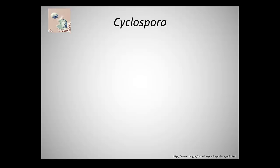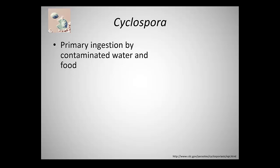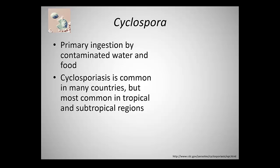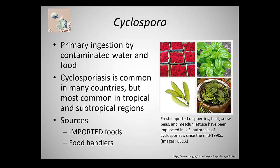Cyclospora alone caused 7 of the 18 berry-related outbreaks over the past 23 years, all due to imported berries. Farm workers from countries where Cyclospora is endemic could be another reservoir. Cyclospora is common in tropical and subtropical regions. Food products implicated include fresh imported strawberries, basil, snow peas, and lettuce.